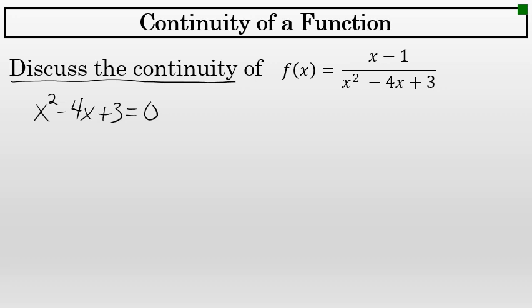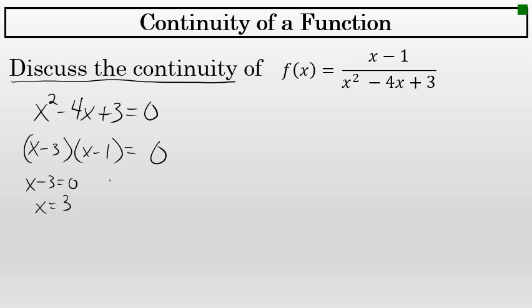In this case, the denominator is a quadratic, which is factorable. x² - 4x + 3 factors to (x - 3)(x - 1), which means that the x values that make the denominator 0 are x = 3 and x = 1. These are two x values where there are discontinuities in the graph.